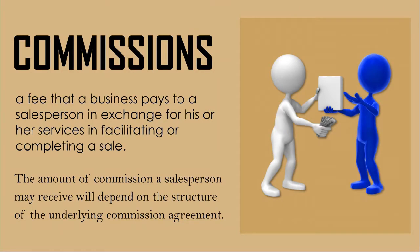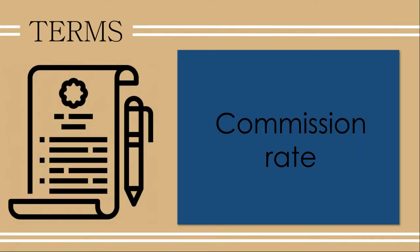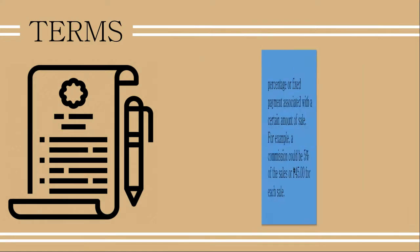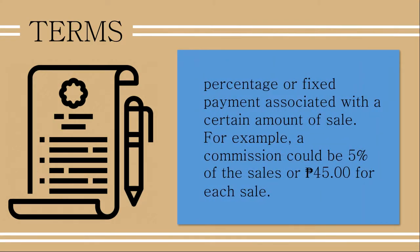In commission, what do we need to know? What terminology do we have to remember? In calculating commission, we take on these terms. First is the commission rate — it is a percentage or fixed payment associated with a certain amount of sale. For example, a commission could be 5% of the sales or 45 pesos for each sale.